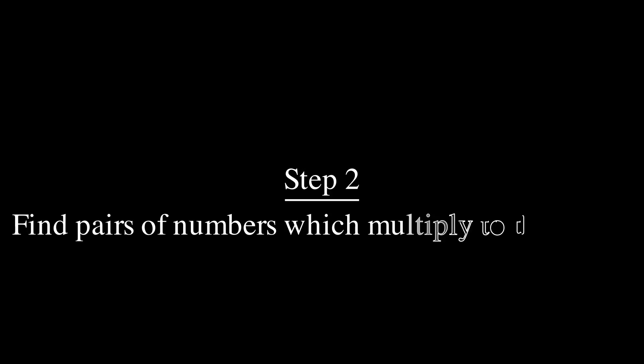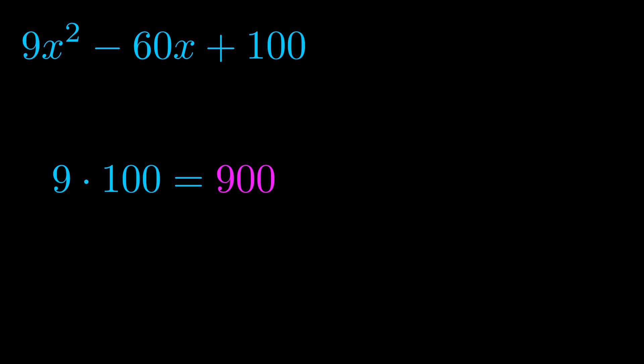Step two is to try to find all of the pairs which multiply to this number. Now turns out you don't really need to find all of them, but go ahead and write down as many numbers as you can that multiply to the magenta value for now. Pause the video and resume when you're ready to continue.